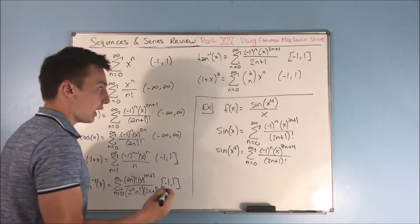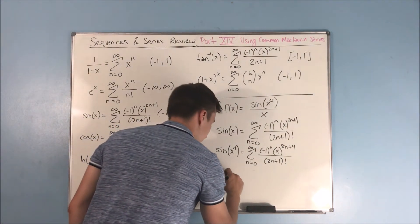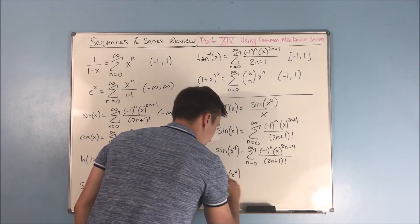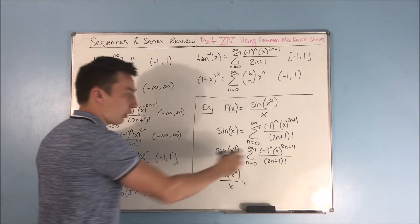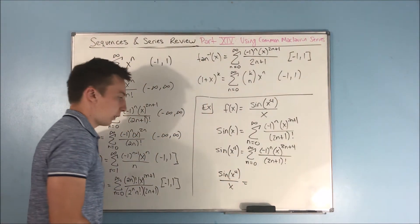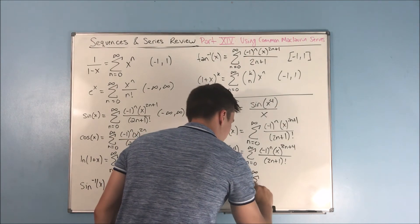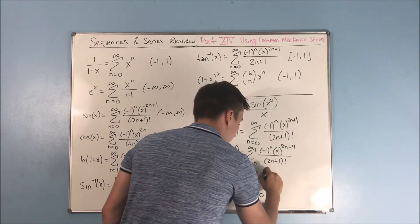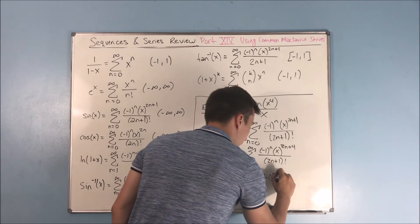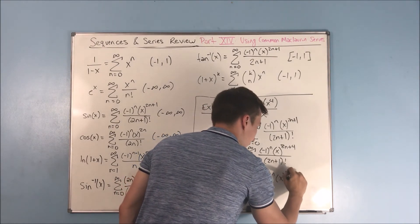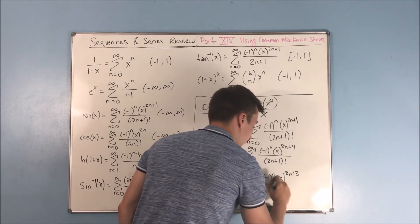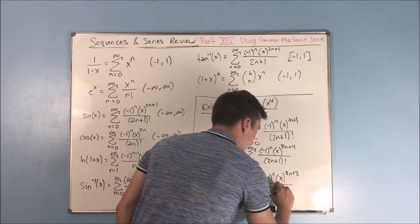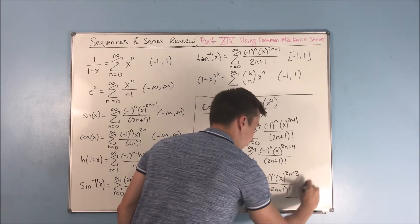And that's going to be over 2n plus 1 factorial. Now, if we're dividing an x on top of that, all that's going to do is just subtract 1 from that exponent. That's all we're doing there. So now we have the sum from n equals 0 to infinity of negative 1 to the n times x to the 8n plus 3 over 2n plus 1 factorial. And there you go.